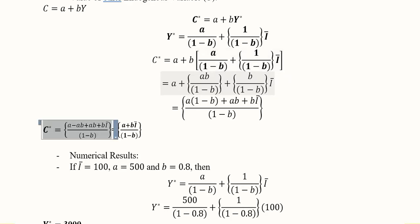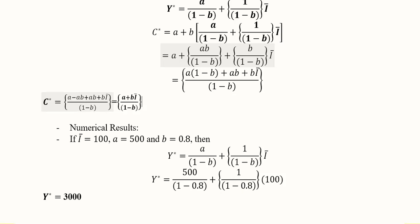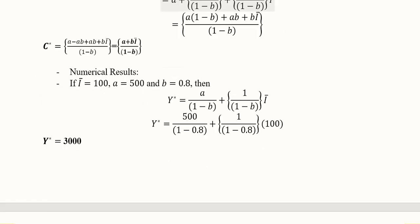We will get the equilibrium level of consumption and this has the exogenous variable of I bar, so this is a reduced form equation because an endogenous variable is represented in terms of an exogenous variable.